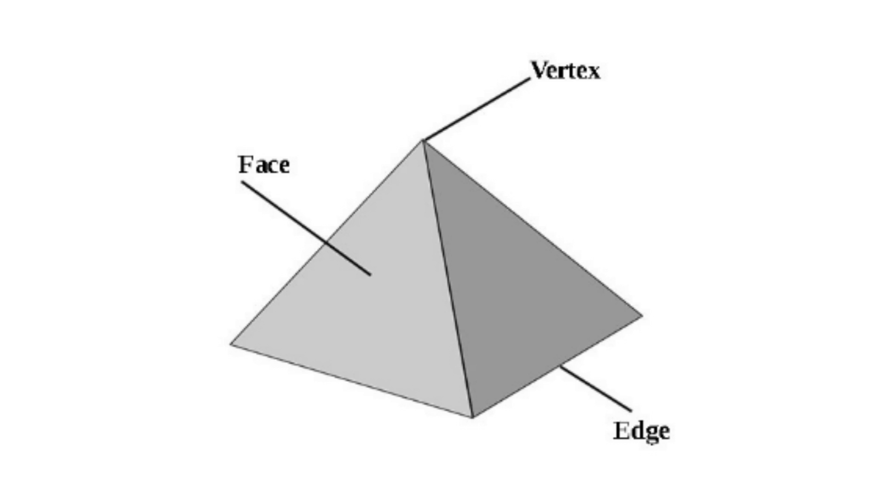Our example pyramid here has a flat face as we can see here, a vertices or vertex which is where 3 or more points meet, an edge which is a straight edge that surrounds the shape.